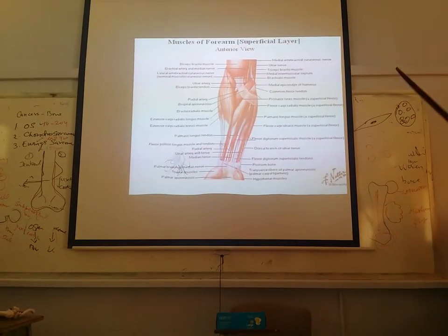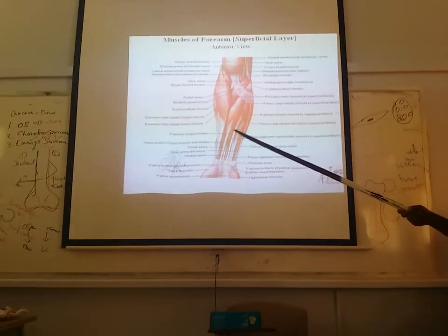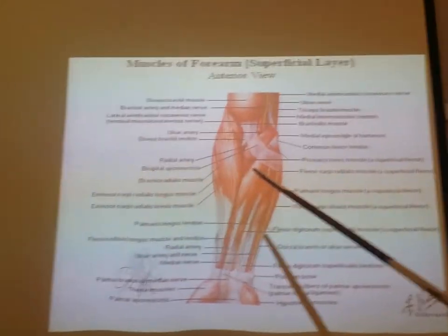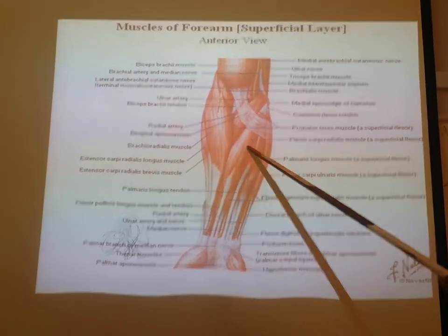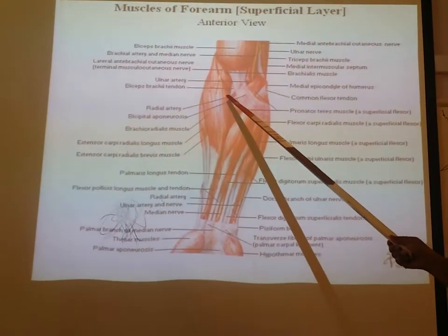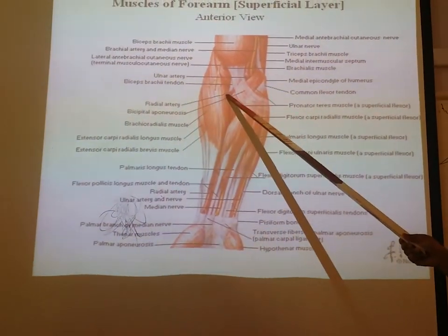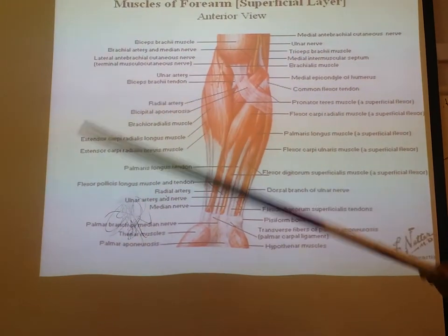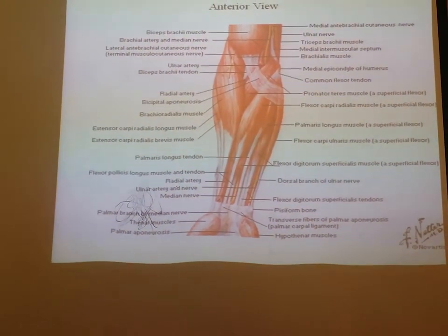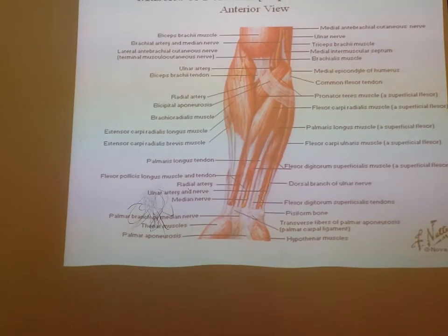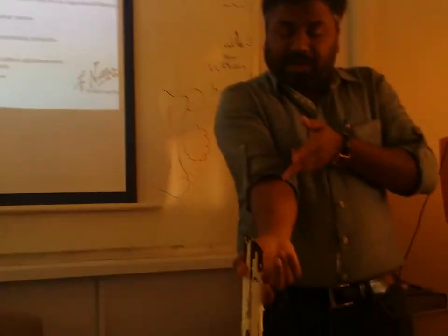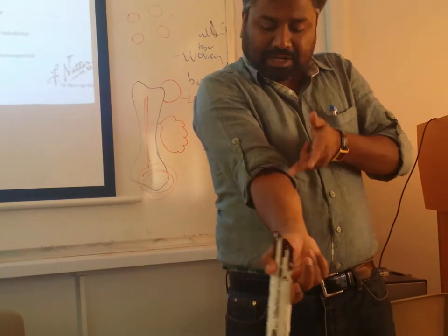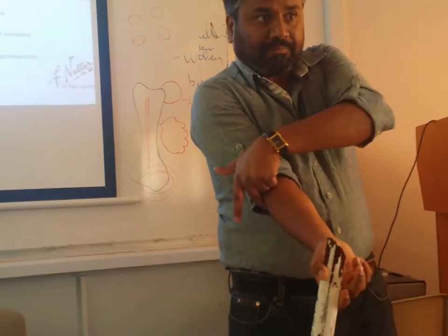This is how the front of the forearm looks when you take out the skin and the deep fascia, showing all the muscles. This belongs to the extensor compartment. From here this is flexor, and from here this is extensor. The anterior and posterior compartments are not exactly anterior and posterior — the medial or anterior begins from here and goes like this, while the extensor goes from here.